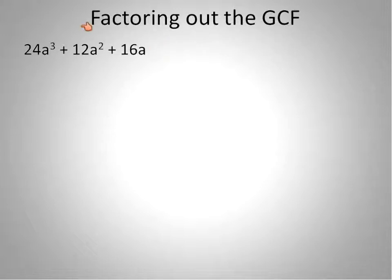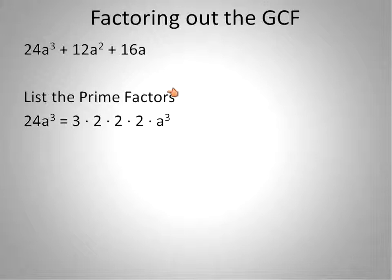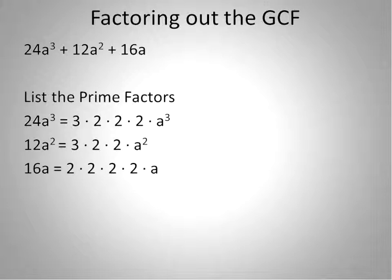Let's go ahead and factor. If you're given a trinomial, which is any expression with three terms separated by addition or subtraction symbols, you can go ahead and factor them using this method. First, you list each term as a product of its prime factors. So 24a to the power of 3 would be 3 times 2 times 2 times 2 times a to the power of 3. Then 12a squared is 3 times 2 times 2 times a squared. And 16a, our final term, is 2 times 2 times 2 times 2 times a. This is where the skills of prime factorization come into play.